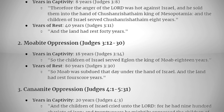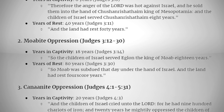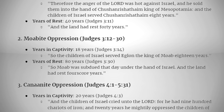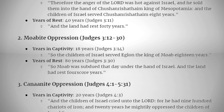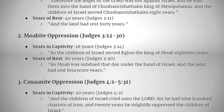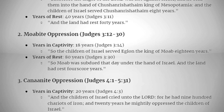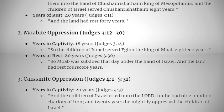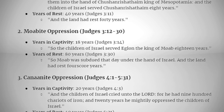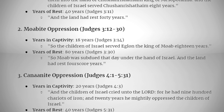Moabite oppression (Judges 3:12-30): years in captivity — 18 years. Judges 3:14: "So the children of Israel served Eglon the king of Moab 18 years." Years of rest — 80 years. Judges 3:30: "So Moab was subdued that day under the hand of Israel, and the land had rest four score years."